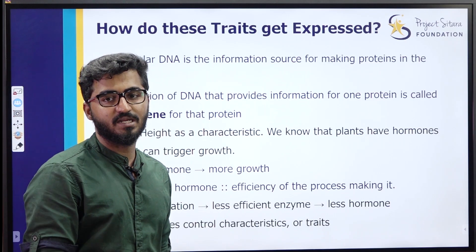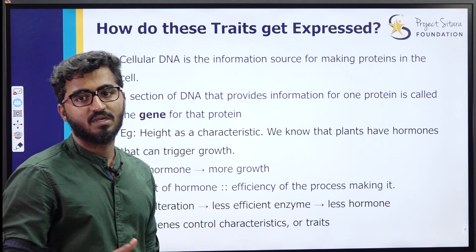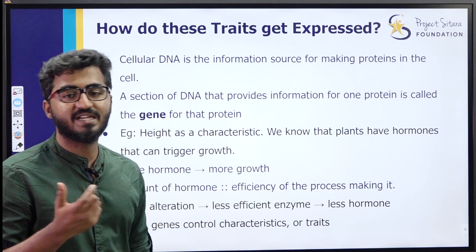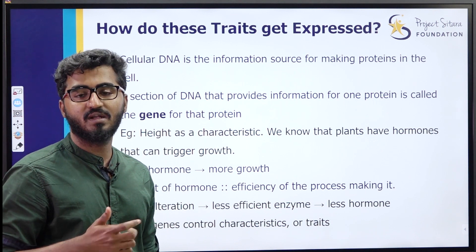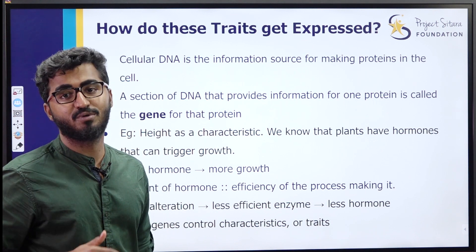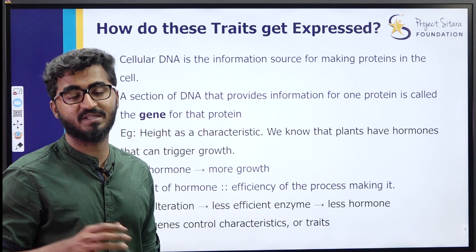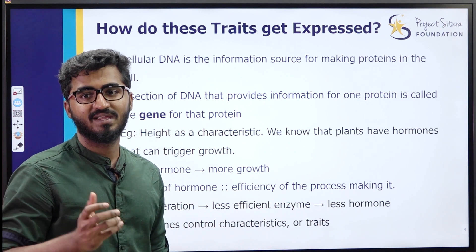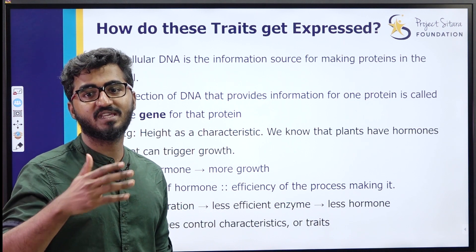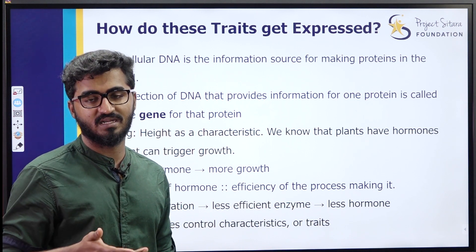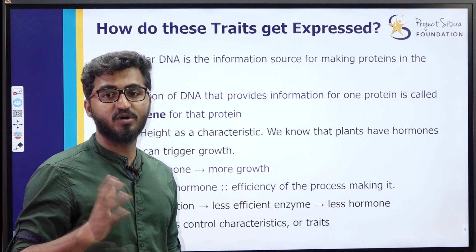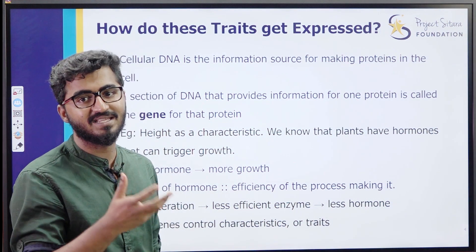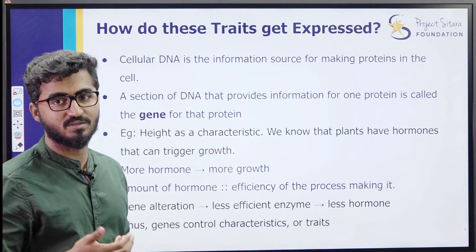In reproduction chapter, why do we study this? Because our cellular DNA has a blueprint - it helps for making proteins. So if proteins are to be created, this DNA is the information source.